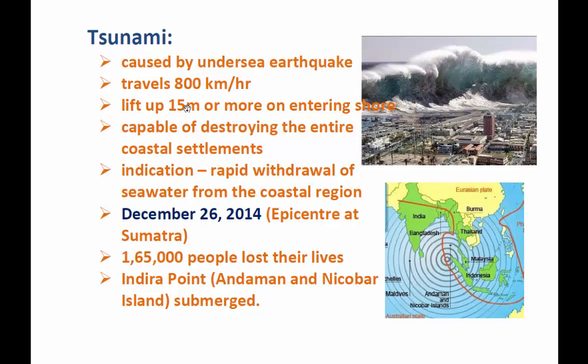During the occurrence of a tsunami, it is capable of destroying entire coastal settlements — areas near coastal regions can be completely destroyed. However, we can know the warning signal of a tsunami: when there is a rapid withdrawal of sea water from the coastal region, moving away from the shore towards the sea, that is the indication. It takes around three to four hours, so people can prepare, be aware, and run away from the coastal region to save themselves.